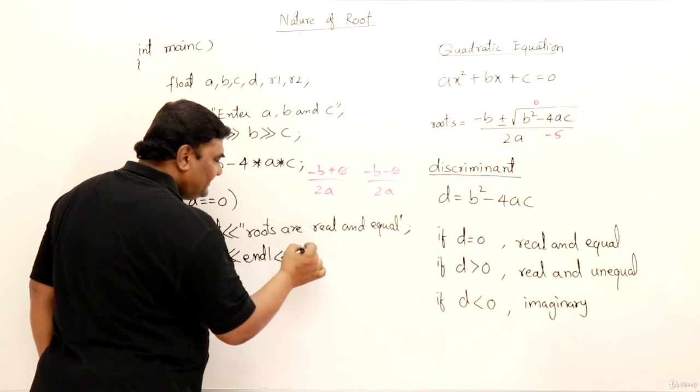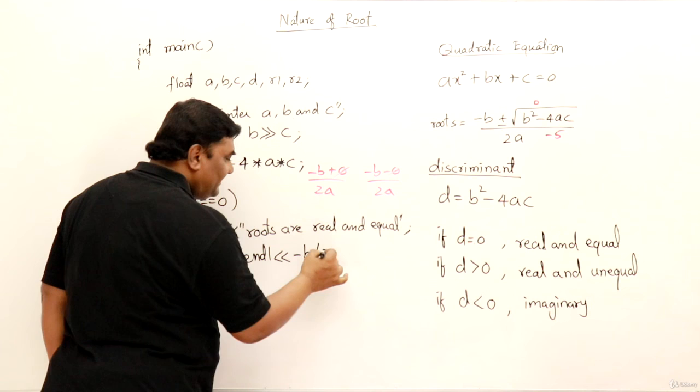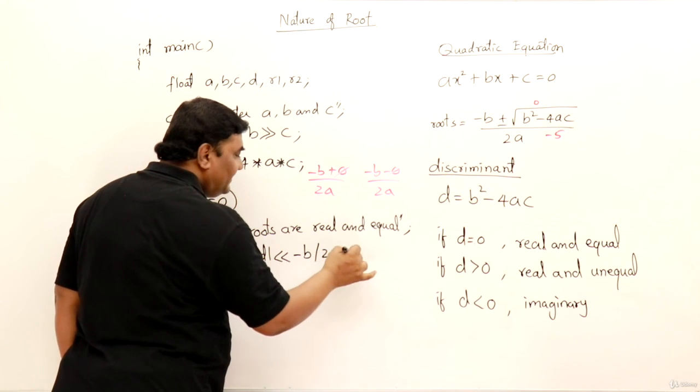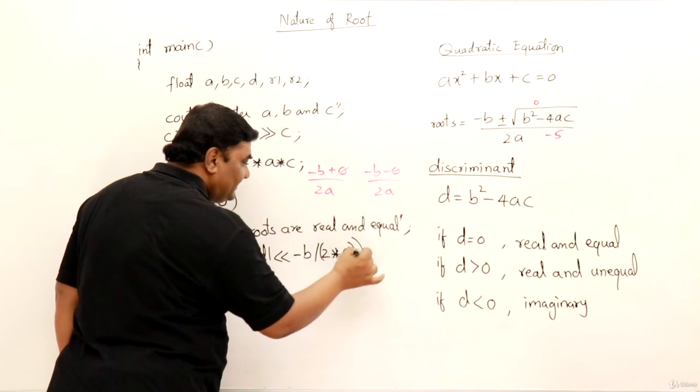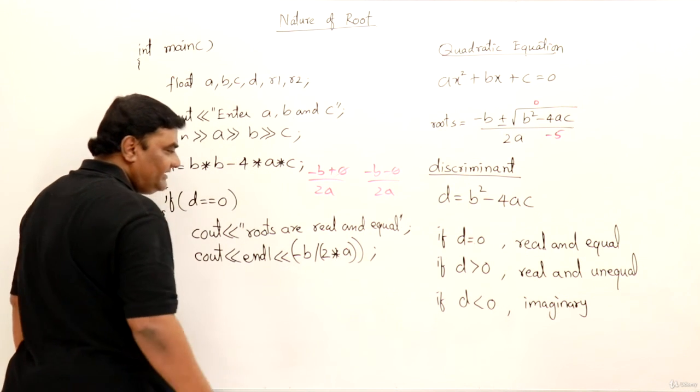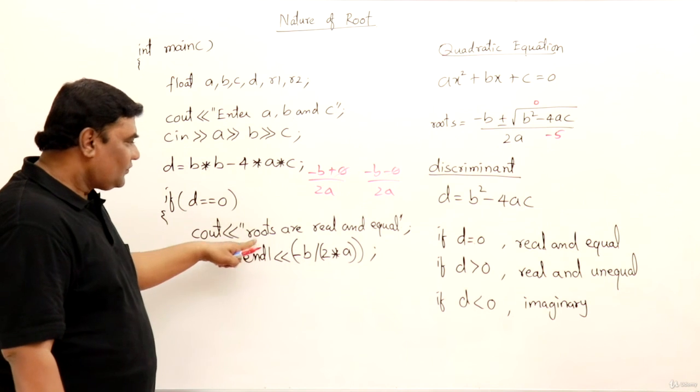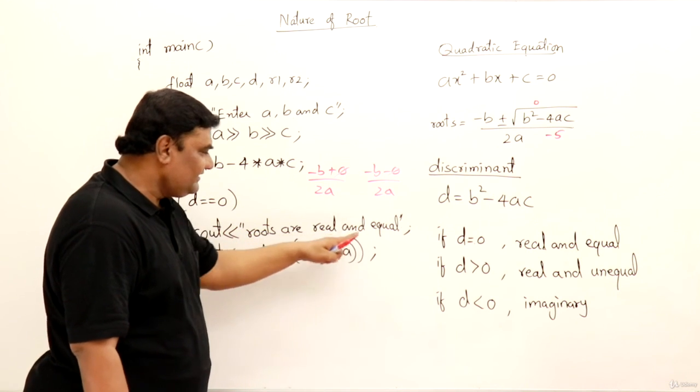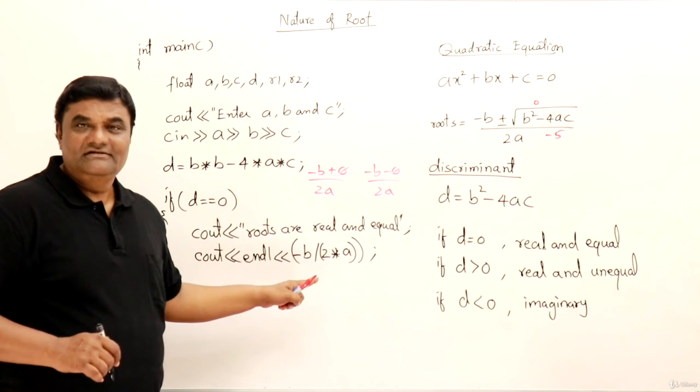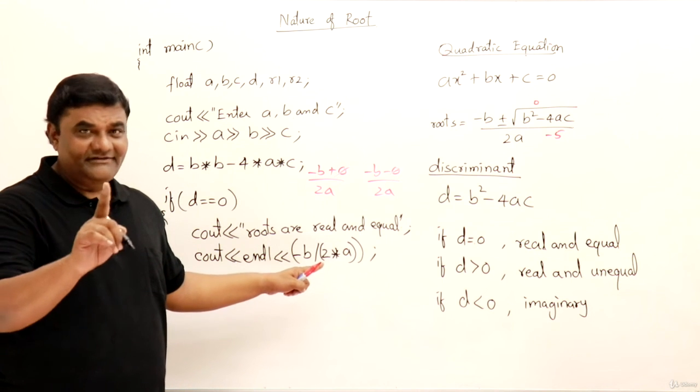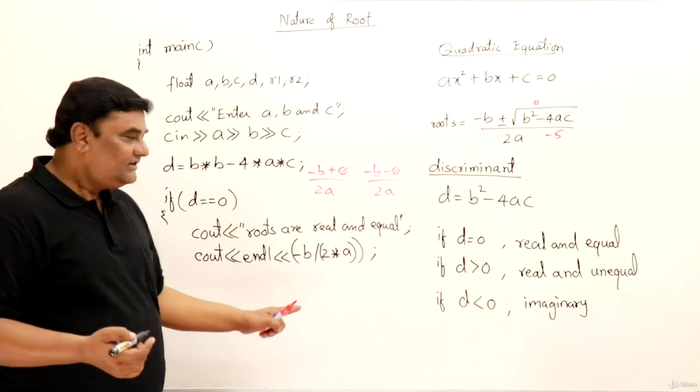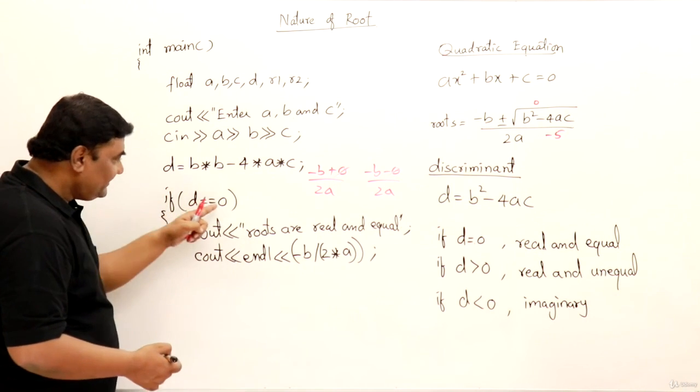So here next line, c out, here after this I should write endl but there is no space so I will write here. You can even write endl in the beginning of the display part also. So endl, what I should display when the roots are equal, minus b by 2a. So directly I will write down here minus b divided by 2 into a, and this should be in the bracket. And this entire thing also if it is in bracket that is better.